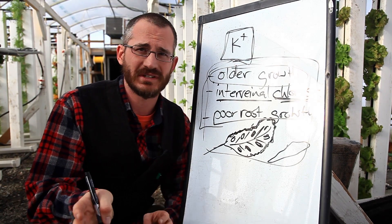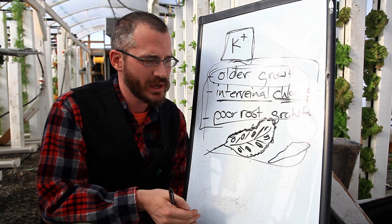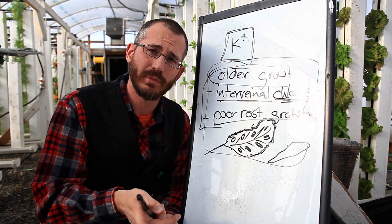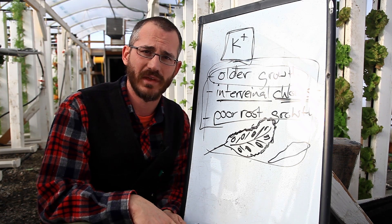So one potassium deficiency in one plant doesn't necessarily look like potassium deficiency in another. They're not all the same. So make sure you go to the Vertical Food Blog and download the key for recognizing potassium deficiencies when they occur.